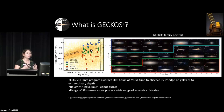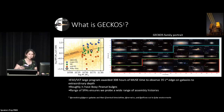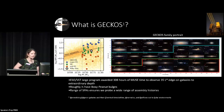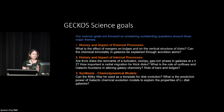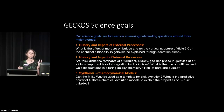So how do you get a Milky Way massed galaxy — how many different ways are there? Three main science goals for GECKOS. First of all, what is the history and the impact of external processes on disk galaxy evolution? I'm talking mergers and gas accretion.